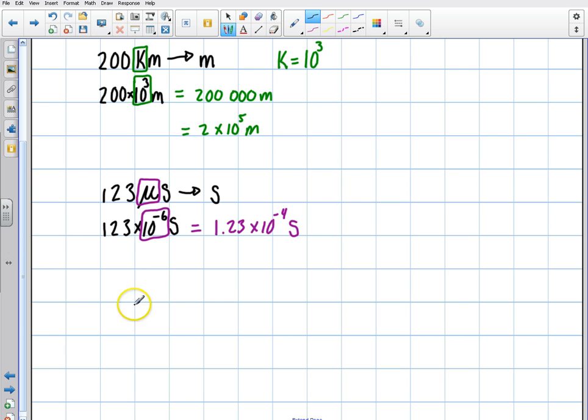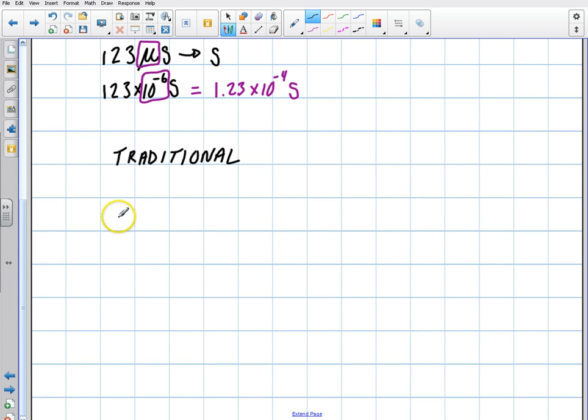So how would it look if I did traditional dimensional analysis? It would just look a little longer. It's just to show you. So doing traditional, we would start out with 1.23 microseconds. Some people do a line. So 1.23 microseconds. And so we would have to start going down the line. We would say 1 microsecond is 10 to the minus 6 seconds.